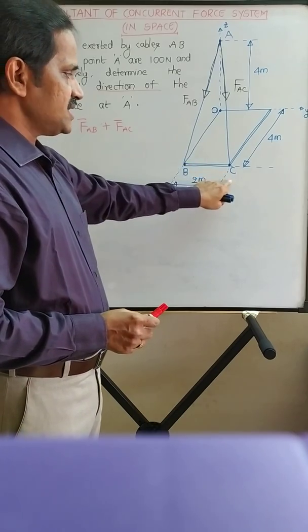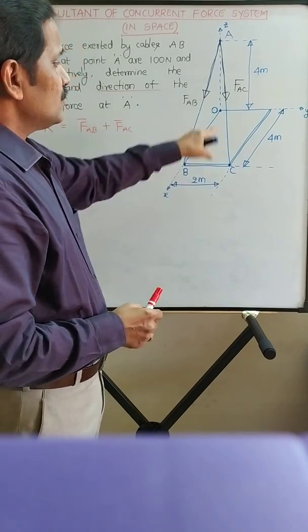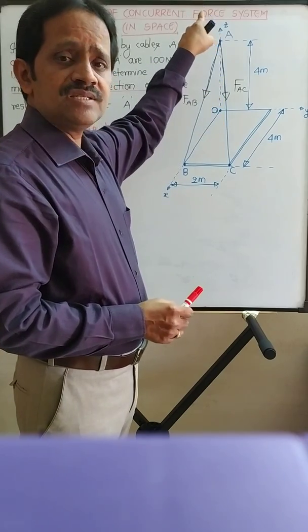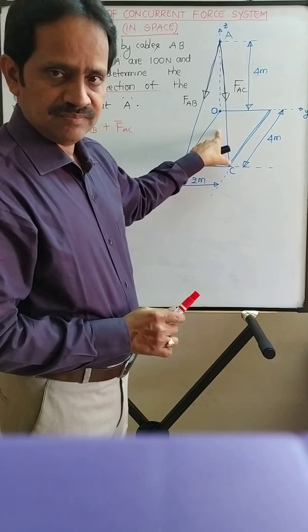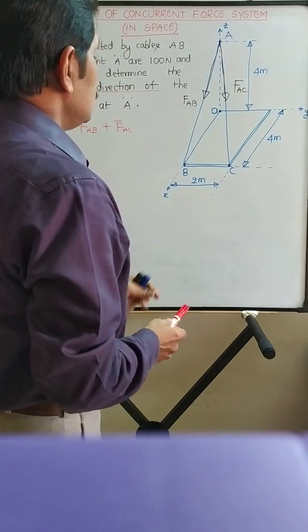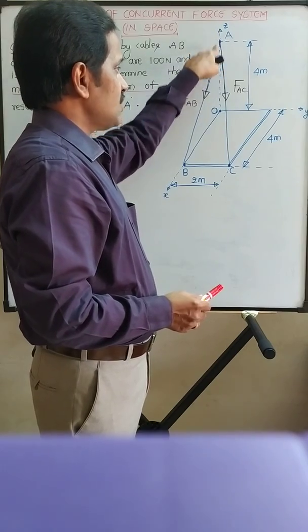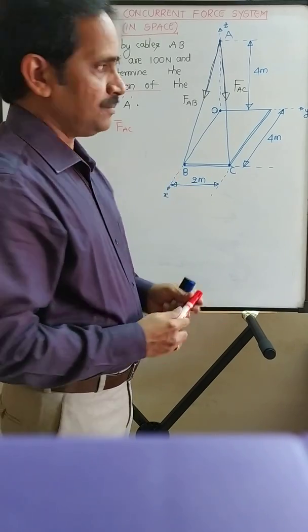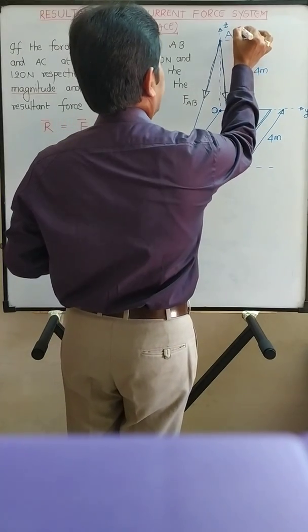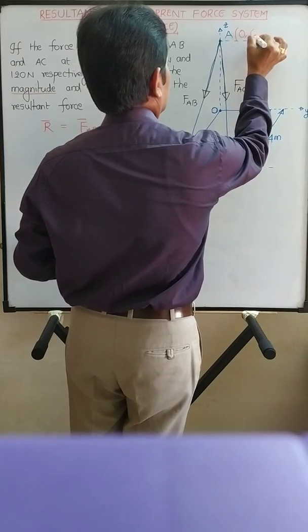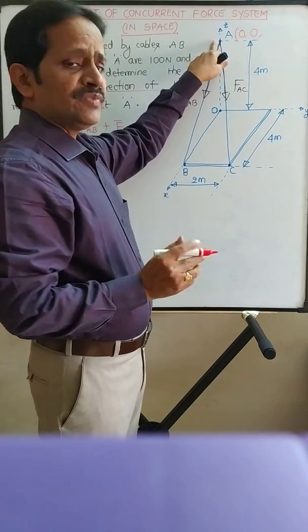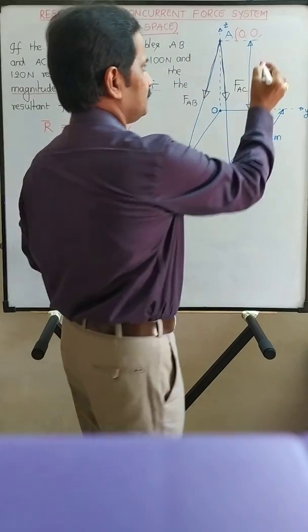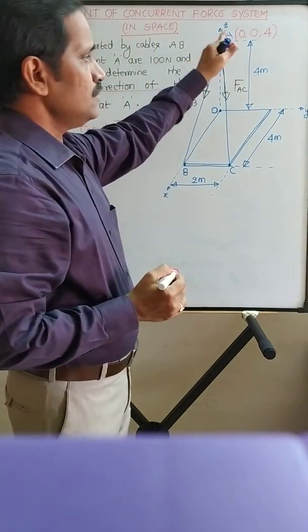We need the coordinates of points A, B, and C with respect to the origin. The x-axis is given in this direction, this is the y-axis, and the vertical axis is Z, as shown in the figure. Point A is on the z-axis, so the x and y coordinates are 0. The z coordinate is 4 meters, seen from the line parallel to the z-axis. So the coordinates of point A are (0, 0, 4).